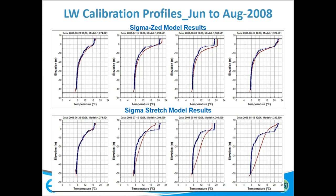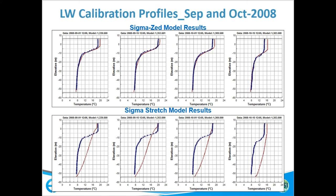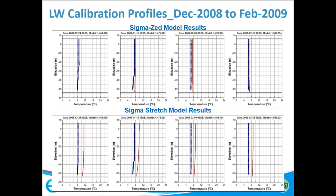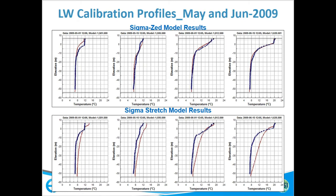The top panel shows the Sigma Z model and the bottom panel shows the calibrated Sigma stretch model, at different times as the year progresses. We're going into fall turnover, reach fall turnover, and then march into re-stratification. You can see we miss it sometimes, but it does a really good job of tracking with the data. With the Sigma Z model versus the Sigma stretch model — this is a real common issue — you can kind of get the surface right and kind of get the bottom right, but you just can't get that vertical structure in between right. That's the hard part, and this tool helps you do that.